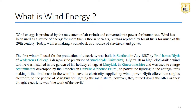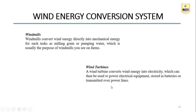The first windmill for production of electricity was built in Scotland in July 1887 by Professor James of Anderson College. From wind energy, we have two types of conversion systems. One is the windmill, which converts wind energy directly into mechanical energy - used in ancient times for milling grain and pumping water. The other is the wind turbine mechanism, which converts wind energy directly into electrical energy. The wind turbine converts wind into mechanical energy, which is then related to electrical energy through a rotor hub assembly or coil.